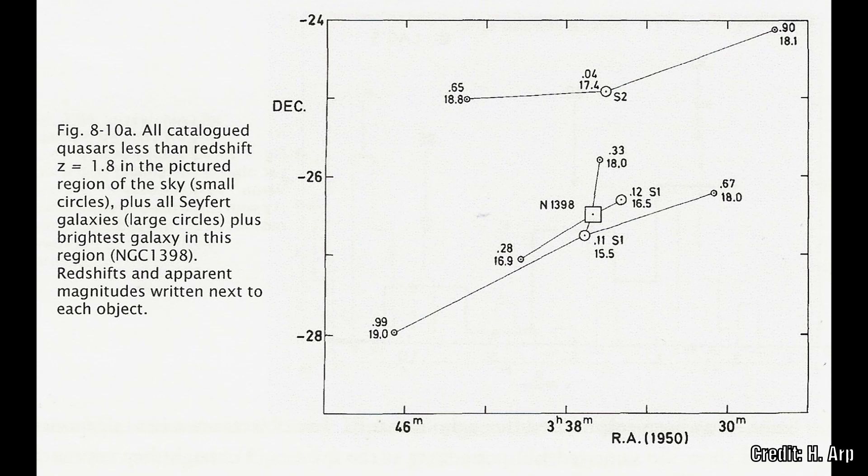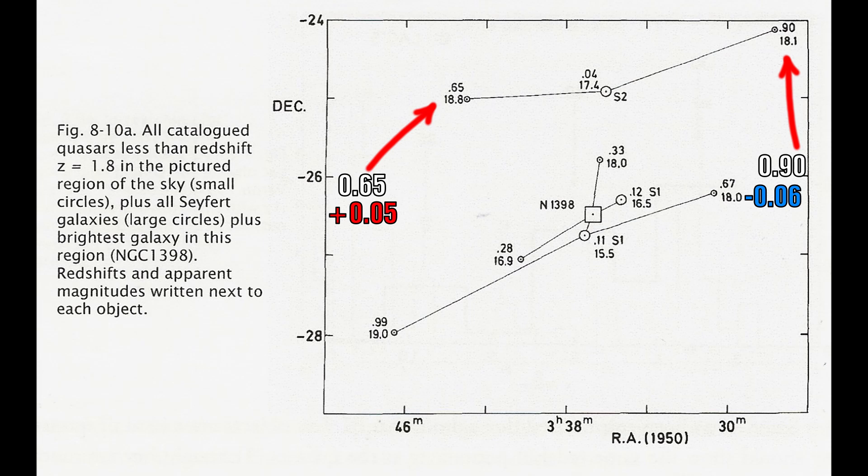If we take an example of a pair of quasars across from a Seyfert galaxy, on the left side we have a quasar at 0.65 and on the other we have one at 0.9. The first is 0.05 more than the 0.6 peak and on the other side it is 0.06 less than 0.96 peak. This implies that one is moving towards us and one is moving away from us.